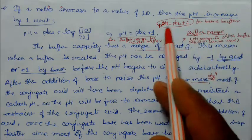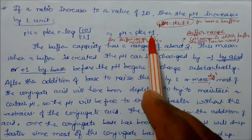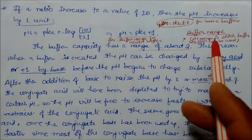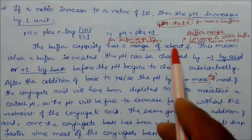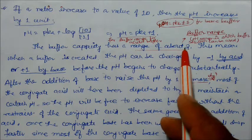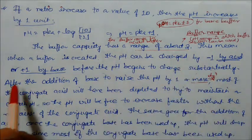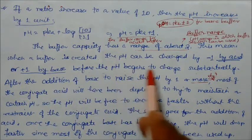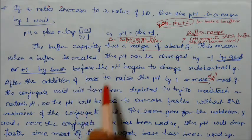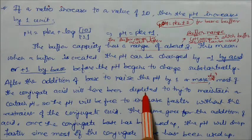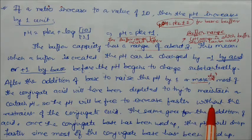For a basic buffer, pOH equals pKb plus or minus 1. So the buffer range for an acidic buffer is pKa ± 1, meaning the total capacity spans 2 pH units — from pKa minus 1 to pKa plus 1. By adding acid, the pH can be changed by minus 1, and by adding base it can be changed by plus 1. Beyond this, most of the conjugate acid gets depleted and pH will increase faster without resistance.